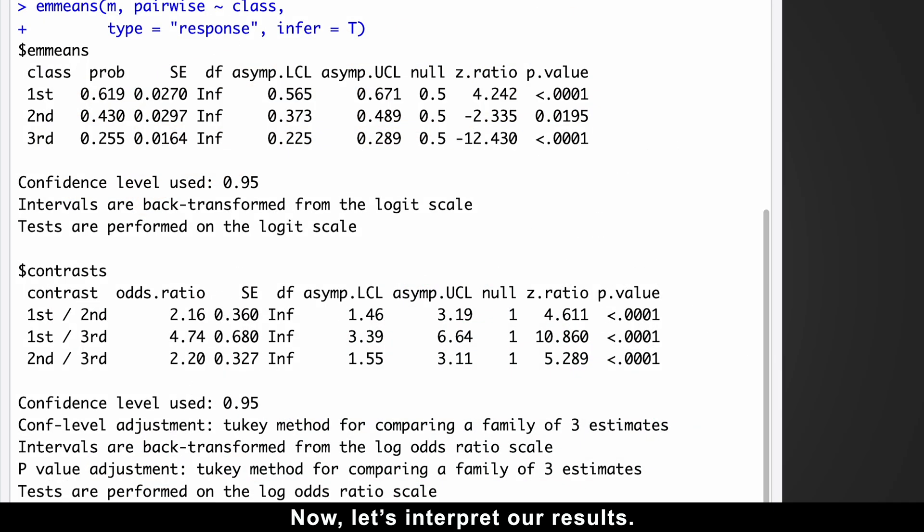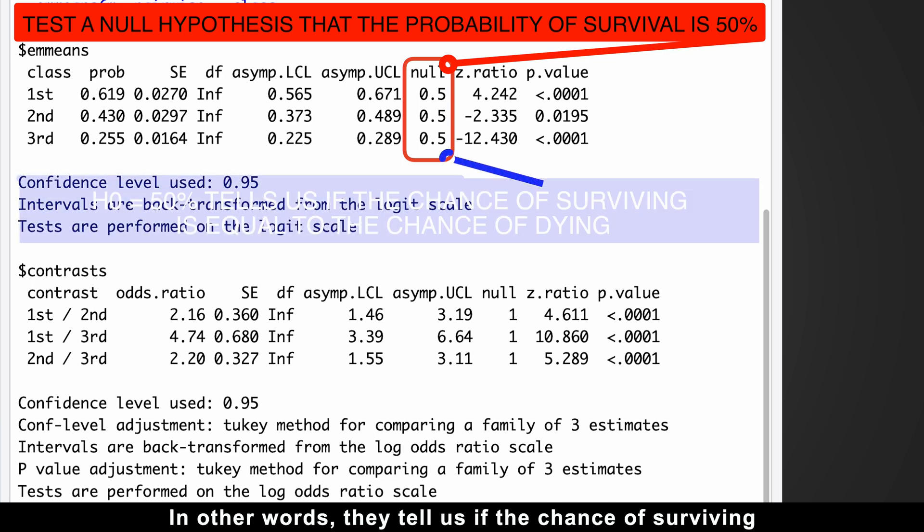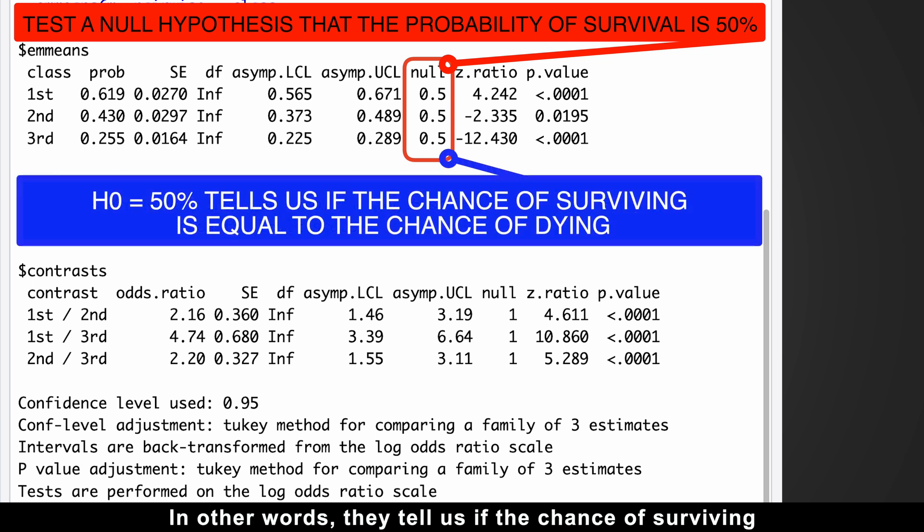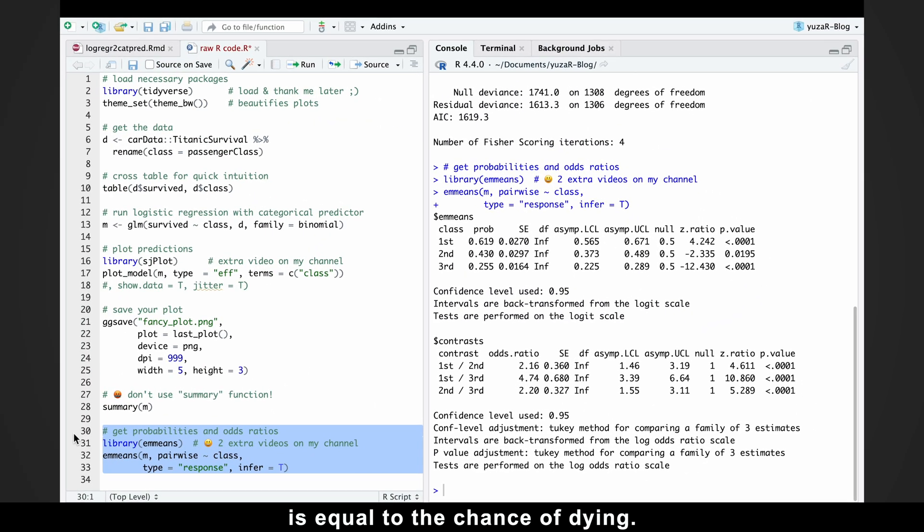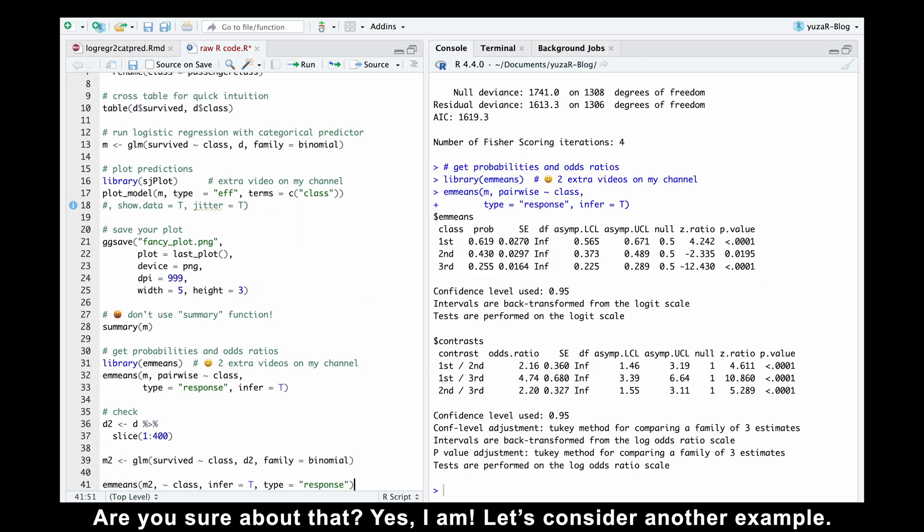Now let's interpret our results. First, we can examine the exact probabilities of survival for each passenger class and see if they are statistically significant. The p-values associated with these probabilities test the null hypothesis that the probability of survival is 50%. In other words, they tell us if the chance of surviving is equal to the chance of dying. Are you sure about that? Yes, I am.